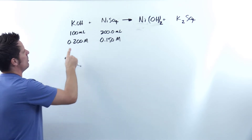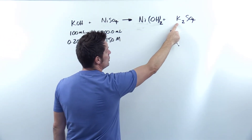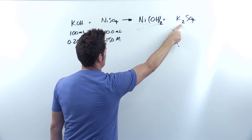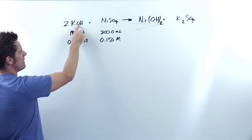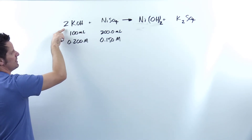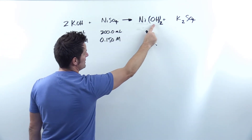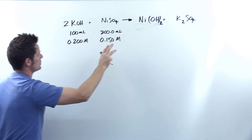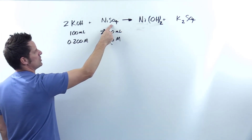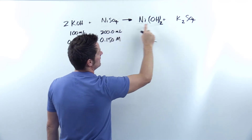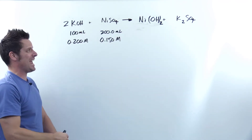So how would we balance this? I've got one K on the left side of the equation and two Ks on the right. So to balance that, I'm going to add a coefficient of two on the left. Now my Ks are balanced. With that two added, it multiplies through so I have two OHs on the left — and I have two OHs on the right because there are parentheses around OH with a subscript of two. I have one nickel on the left and one nickel on the right. I have one total sulfate on the left and one total sulfate on the right. So that is now balanced. That is the answer to part A.